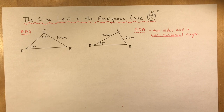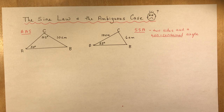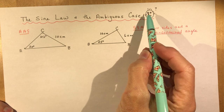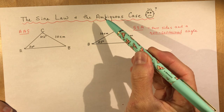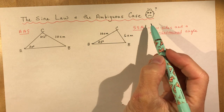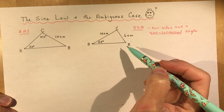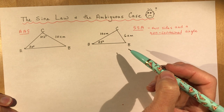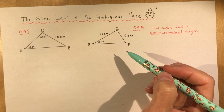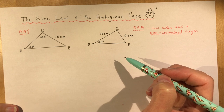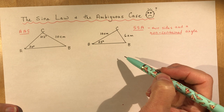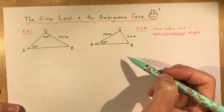The sine law and the ambiguous case. What does ambiguous case mean anyway? In this video I'm going to show you how the sine law works — a quick review from grade 10 — and then we're going to talk about this ambiguous case with the help of my pizza pan. I'm going to give you a demonstration using some manipulatives to help you understand how to figure out how many triangles you can make, which is usually the question that you're being asked.